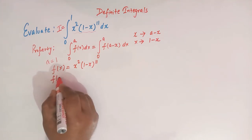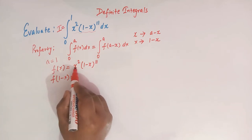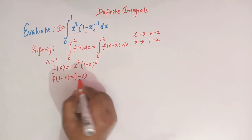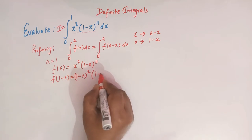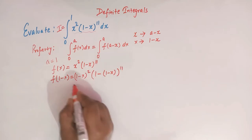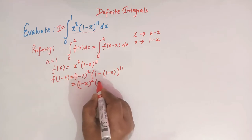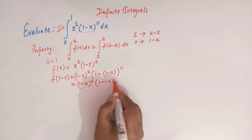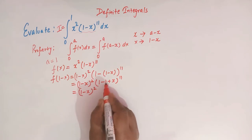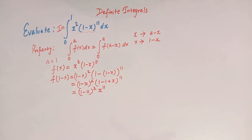So f(1 minus x) is obtained by replacing x. We get (1 minus x) squared times (1 minus (1 minus x)) raised to 11. This simplifies to (1 minus x) squared times (1 minus 1 plus x) raised to 11. The 1 and minus 1 cancel, so we are left with (1 minus x) squared times x raised to 11.